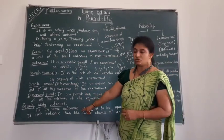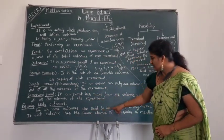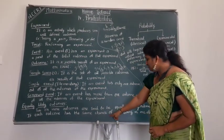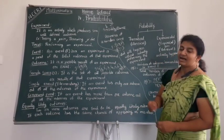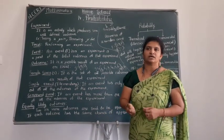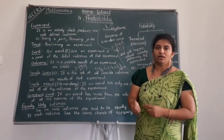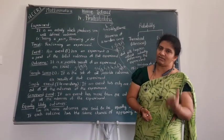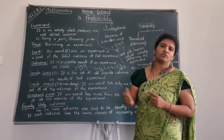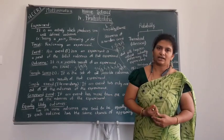Next comes equally likely outcomes. Two or more outcomes are said to be equally likely if each outcome has the same chance of appearing as one another. For example, tossing a coin — we can get head or tail. Head has an equal chance and tail also has an equal chance. Both have the same chance, so these are called equally likely outcomes.